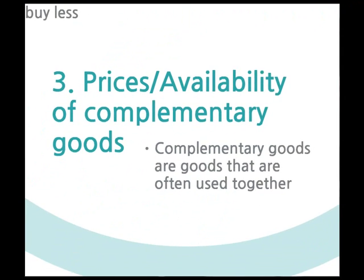The third factor is the price or availability of complementary goods. Complementary goods are goods that are often used together, for example peanut butter and jelly. If the price of jelly goes up, the demand for jelly will go down, causing the demand for peanut butter to go down as well, even if the price of peanut butter doesn't change.